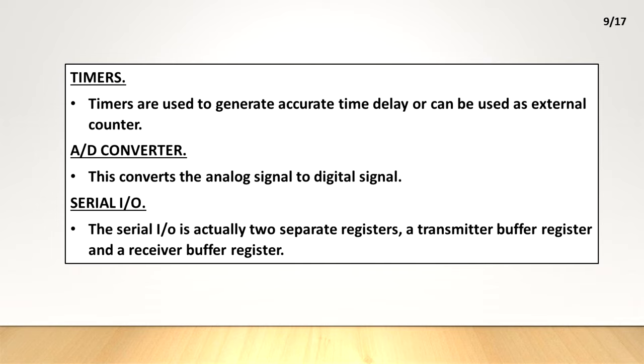Analog to digital converter. This converts the analog signal to digital signal. Serial input output. The serial IO is actually two separate registers - A transmitter buffer register and a receiver buffer register.